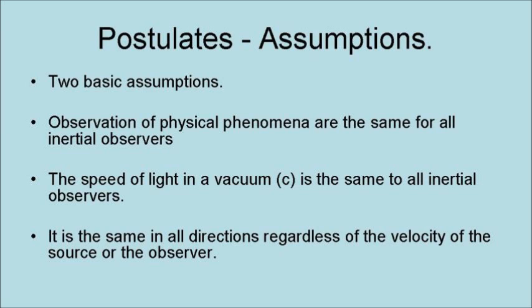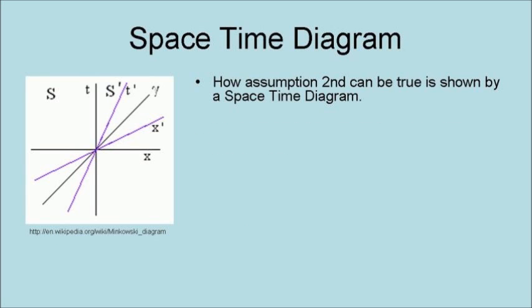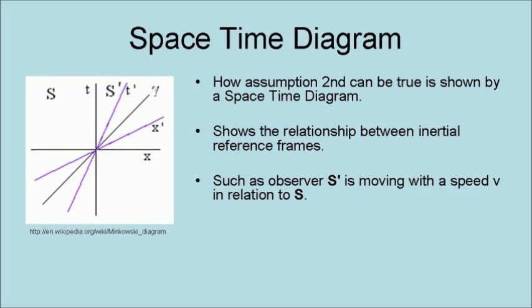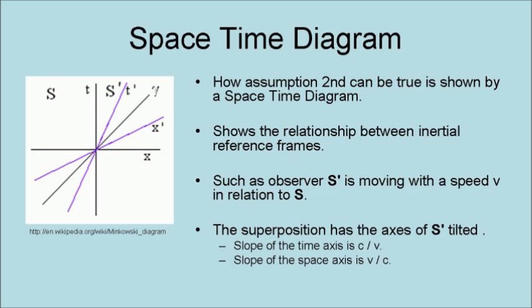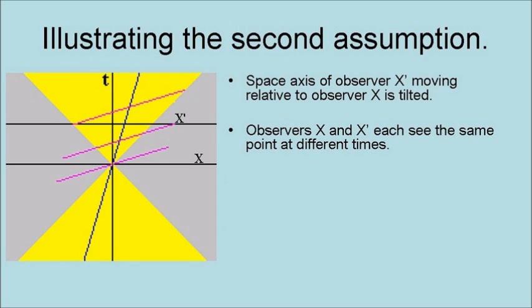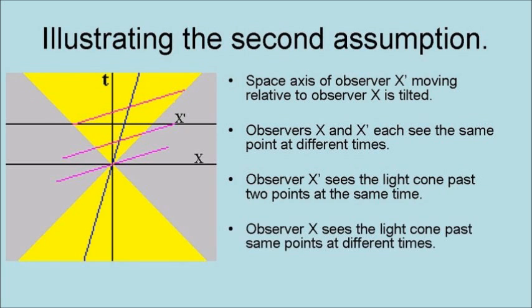That is, it is the same in all directions, regardless of the velocity of the source or the observer. How assumption 2 can be true is shown by a spacetime diagram. It shows the relationship between inertial reference frames, such as observer S' moving with a velocity of V in relation to S. The superposition has the axis of S' tilted such that the slope of the time axis is C over V, and the slope of the space axis is V over C. The space axis of observer X' moving relative to observer X is tilted. Observers X and X' each see the same point at different times. As a result, X' sees the light cone pass two points at the same time, while observer X sees the light cone pass the same points at different times.